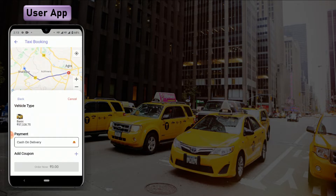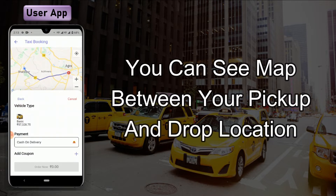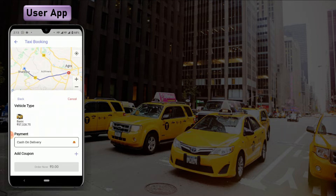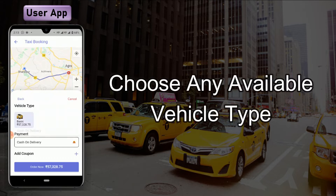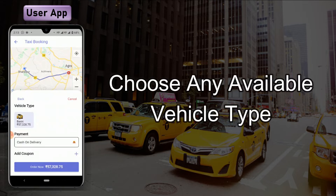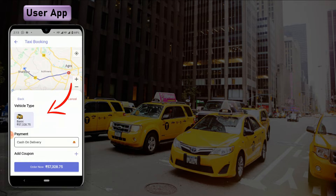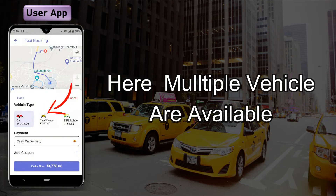Now you can see the map between your pickup and drop location. Choose the vehicle type. In the GOPEC application you can choose any vehicle type that is available, and you can see here that multiple vehicles are available.